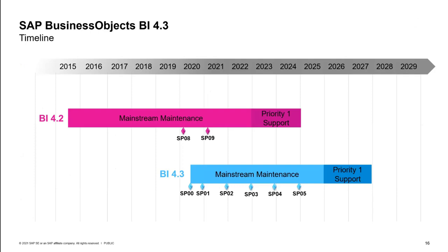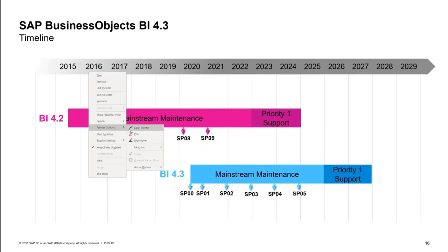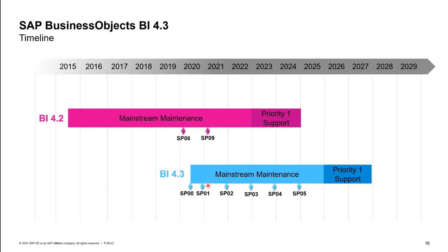Why should you move to 4.3? Looking at the two timelines: today we are in March 2021. We just released Service Pack 1 for 4.3 last December, and we are working on Service Pack 2 for end of this year. The mainstream maintenance for BI 4.3 is supported until end of 2025, while end of mainstream maintenance for BI 4.2 is end of 2022. After SP2 releases, you will have one year to consider moving to 4.3, unless you go with extended priority support for 4.2.